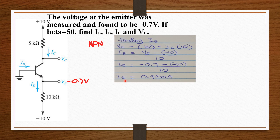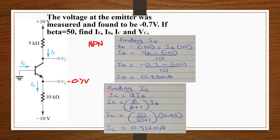From here we find IC. Beta is given as 50. Using IC equals alpha times IE, where alpha equals beta over beta plus 1, we get IC equals beta over beta plus 1 times IE. Inputting our values, IC equals 0.912 milliamperes.